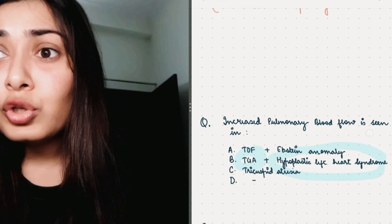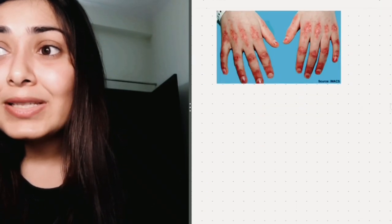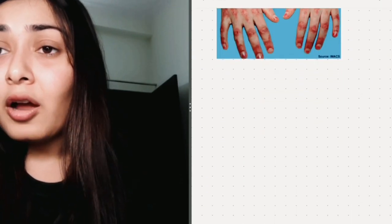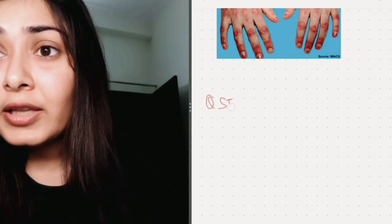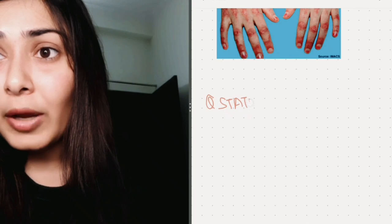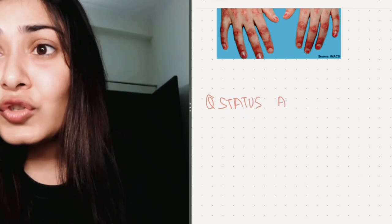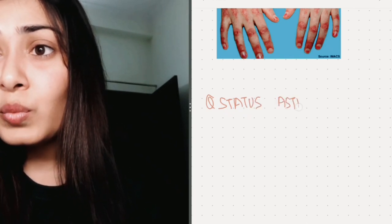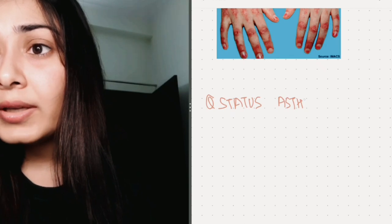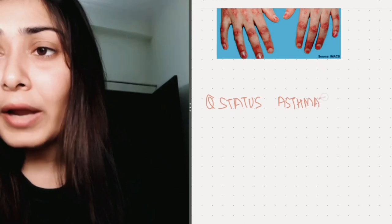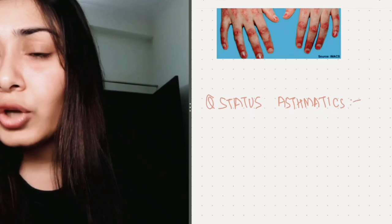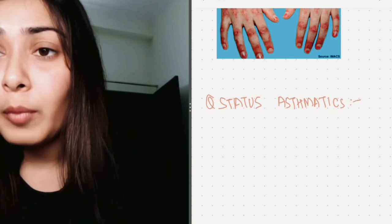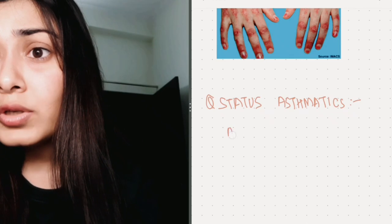One controversial question that I came across was status asthmaticus. A scenario was given where you receive a child in status asthmaticus. Now, in this child, the question was, what were all the things, how would you manage this child? What is the option, how will you manage the child? What all you will require in the management of the child?